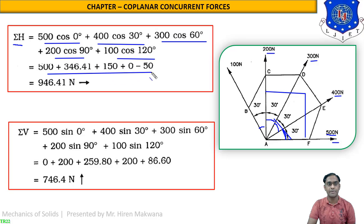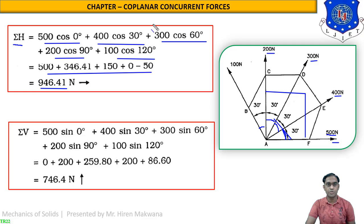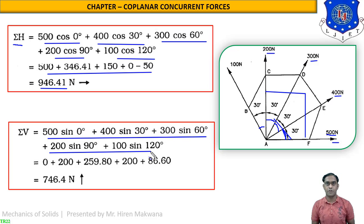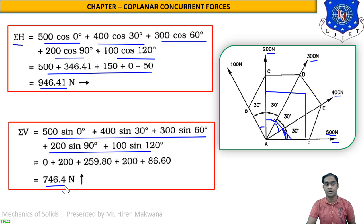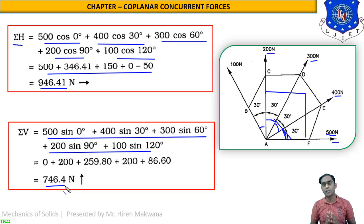After simplification, the answer of sigma H is positive 946.41 N. While calculating sigma V, all the values are the same — only cosine is replaced by sine, as discussed in the earlier lecture. The answer of sigma V is 746.4 N, also positive. Since both sigma H and sigma V are positive, the resultant will lie in the first quadrant.